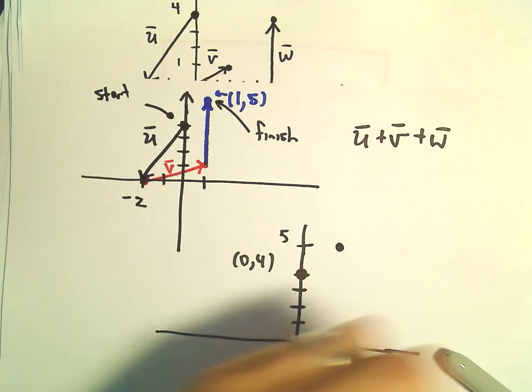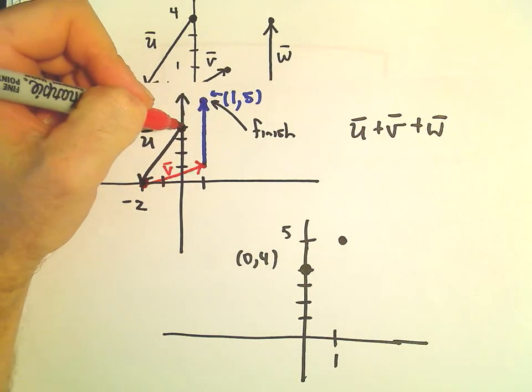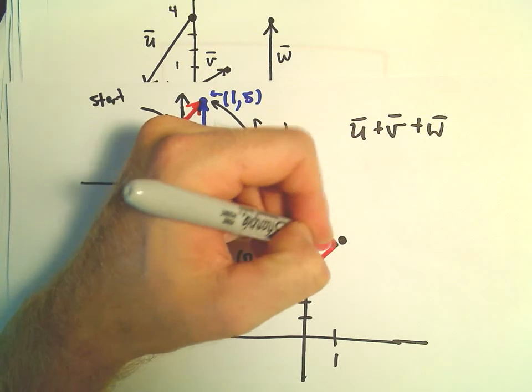and we basically stop at the point (1,5). So our solution, if we look at where we started versus where we stopped, if we connect those, that's going to be this vector right here.